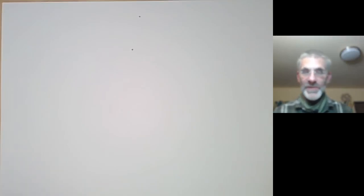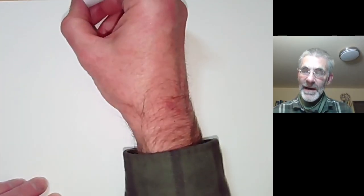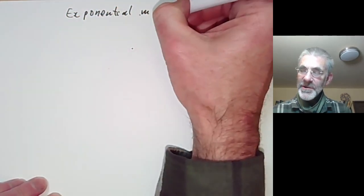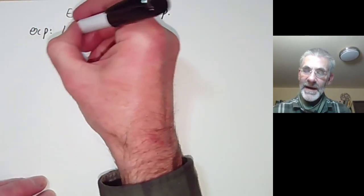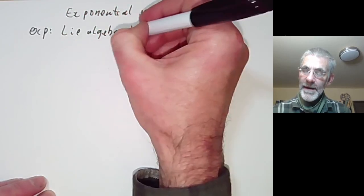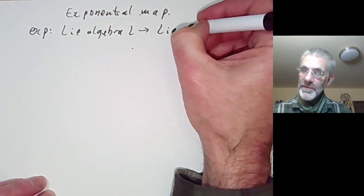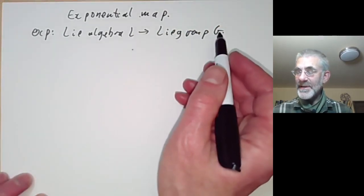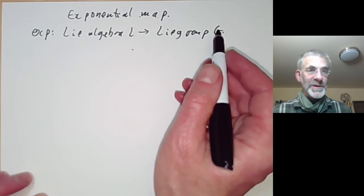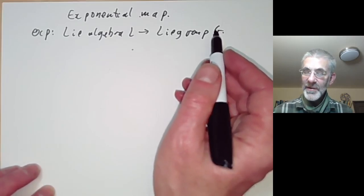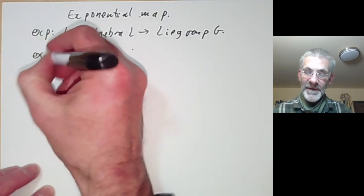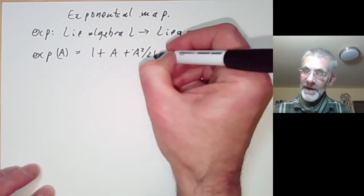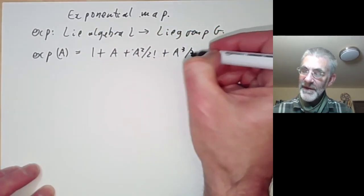This lecture is part of an online graduate course on Lie groups and will be about the exponential map. The exponential map is a map from a Lie algebra L to the corresponding Lie group G. It's very easy to define in the special case that the Lie group G is a matrix group — a closed subgroup of the general linear group. In this case we can define the exponential map of a matrix A to be 1 + A + A²/2! + A³/3! and so on.